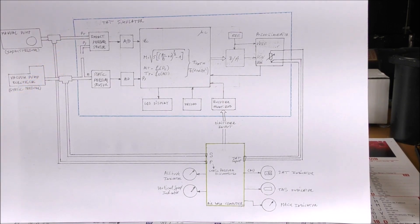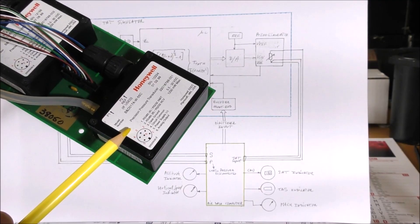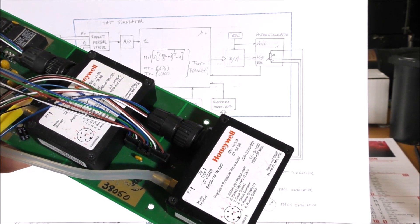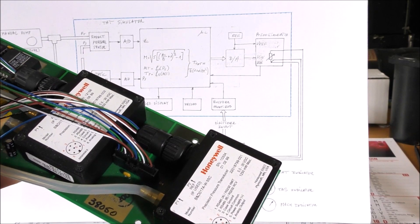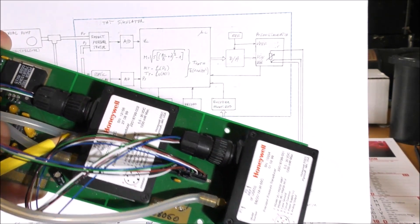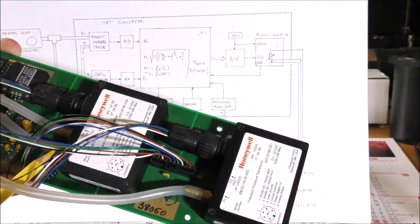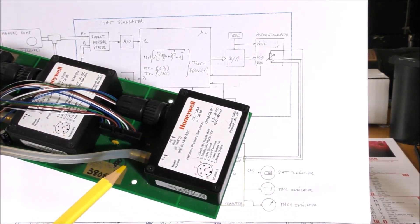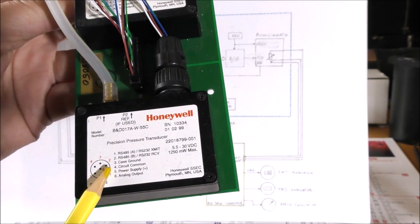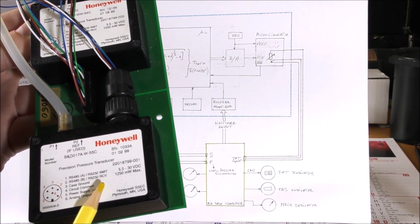For these two sensors, I will use the sensors which are present on this air data computer, which I described a few months ago. This one is for the altitude, and the second one — we can see there are two inputs: one for the static pressure and the second one for the total pressure. But I will disconnect the static pressure, which is common between these two sensors. So there will be only the impact pressure for the air speed and the static pressure for the altitude. This can communicate using RS-232 transmit and receive lines, but there is also an analog output. I think it will be easier to use the analog output instead of the RS-232 output.